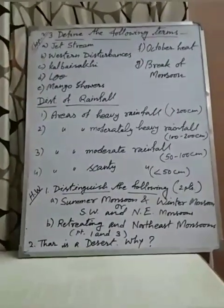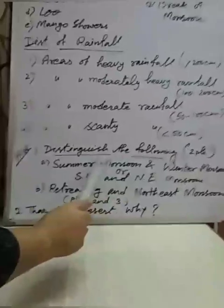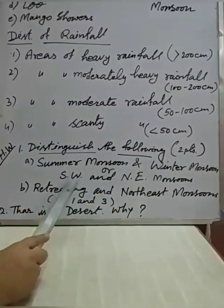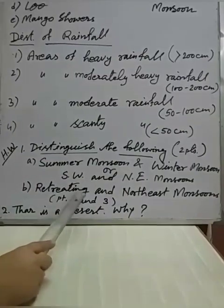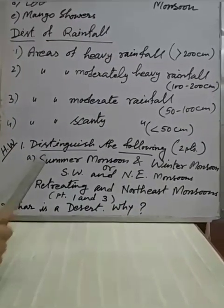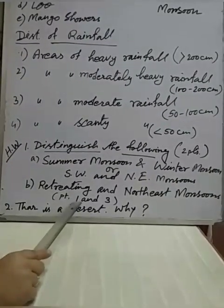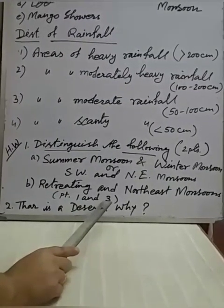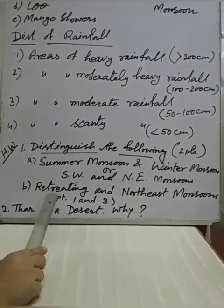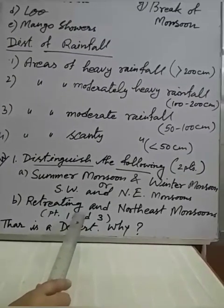After completing the discussion, here is your homework. First, distinguish the following: summer monsoon and winter monsoon (or southwest and northeast monsoon), and retreating and northeast monsoon — write two points for each. For question B, please follow points 1 and 3 from the book, as those are where the exact differences are found. Points 2 and 4 are not applicable.